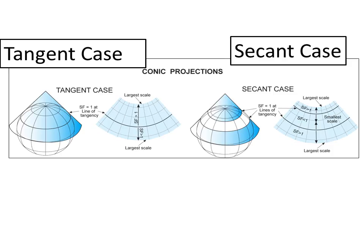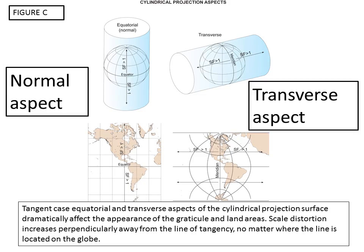You'll see examples of secant case conic maps being used in this class when we do thematic mapping because it's an effective way to represent the area of different parts of North America with a minimum amount of distortion in terms of the principle of maintaining area.